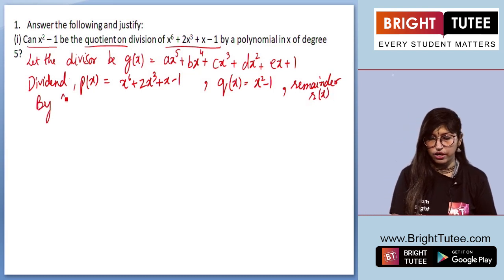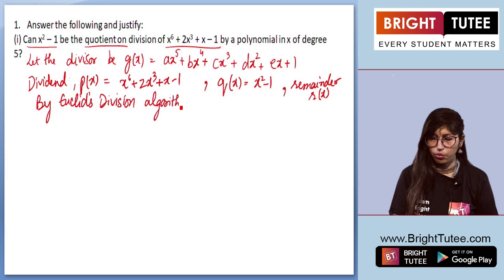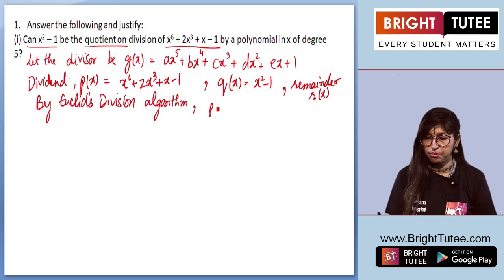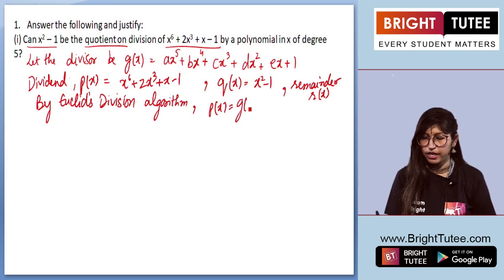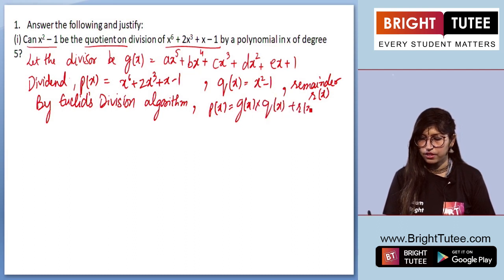By Euclid's division algorithm, what do we get? We're getting P(x) equals to G(x) into Q(x) plus R(x).